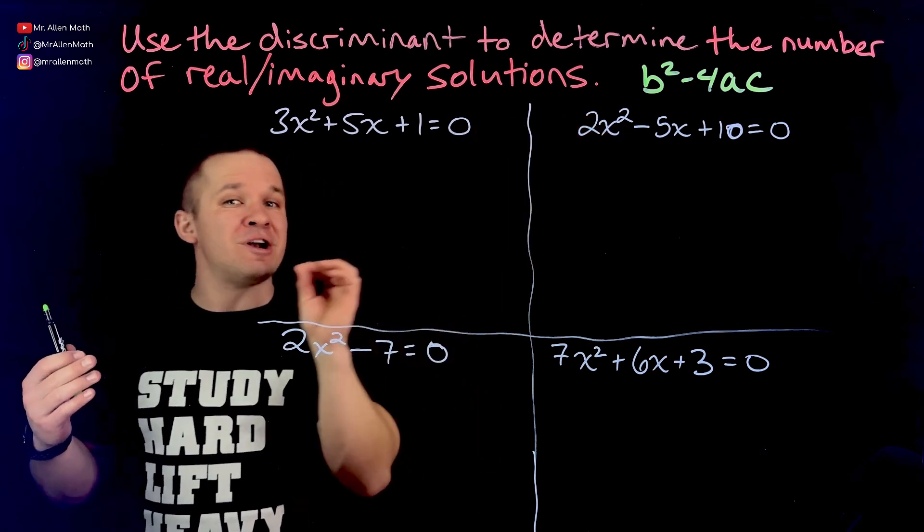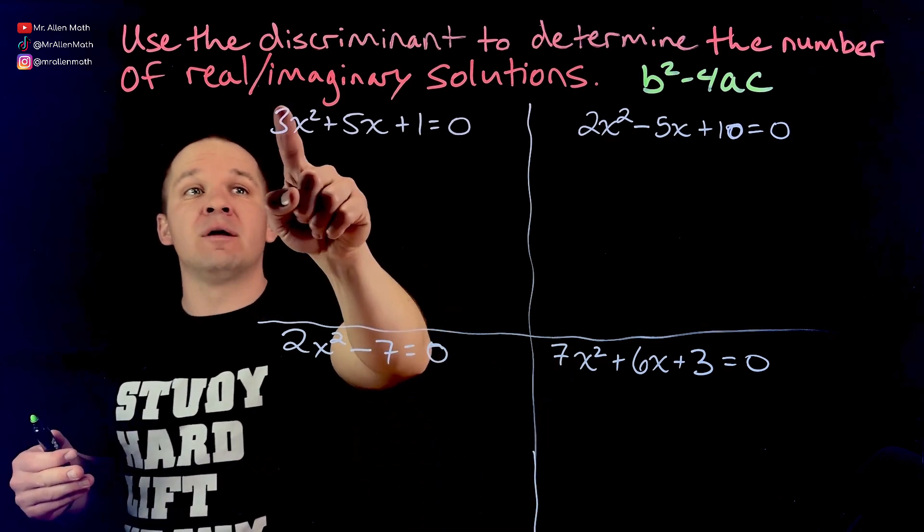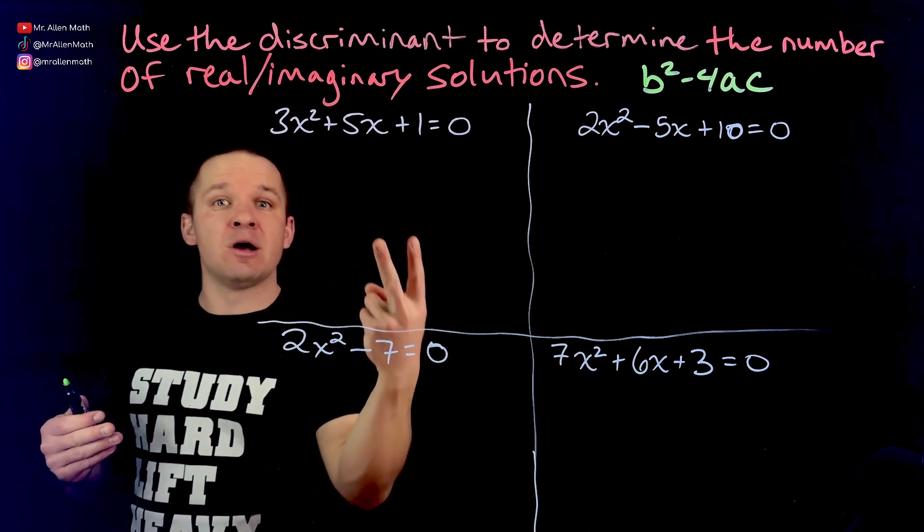Now, if that discriminant right there were negative, I'd be square rooting a negative number, which would cause no real solutions or imaginary solutions. I'd have two of them, the plus and the minus.